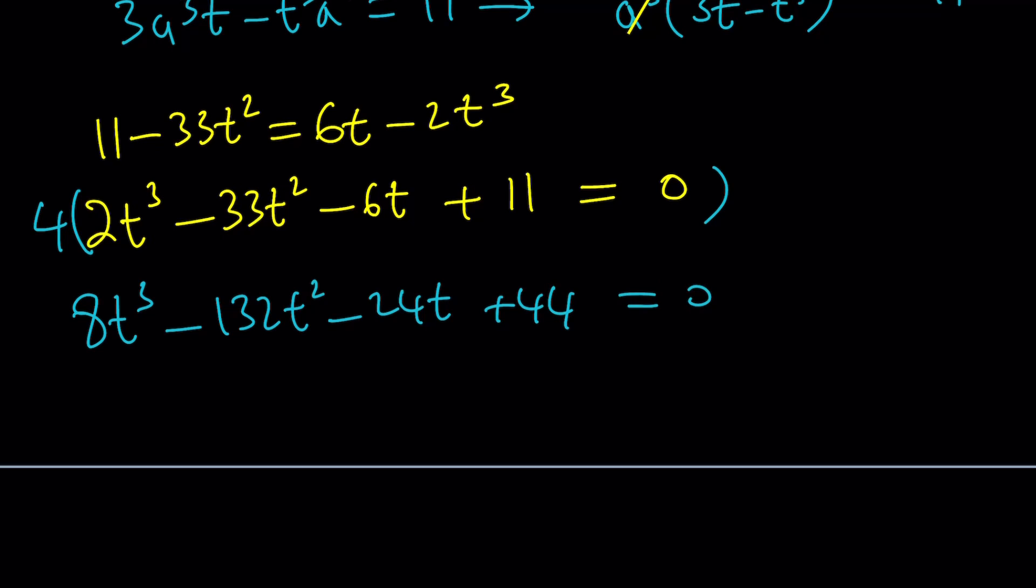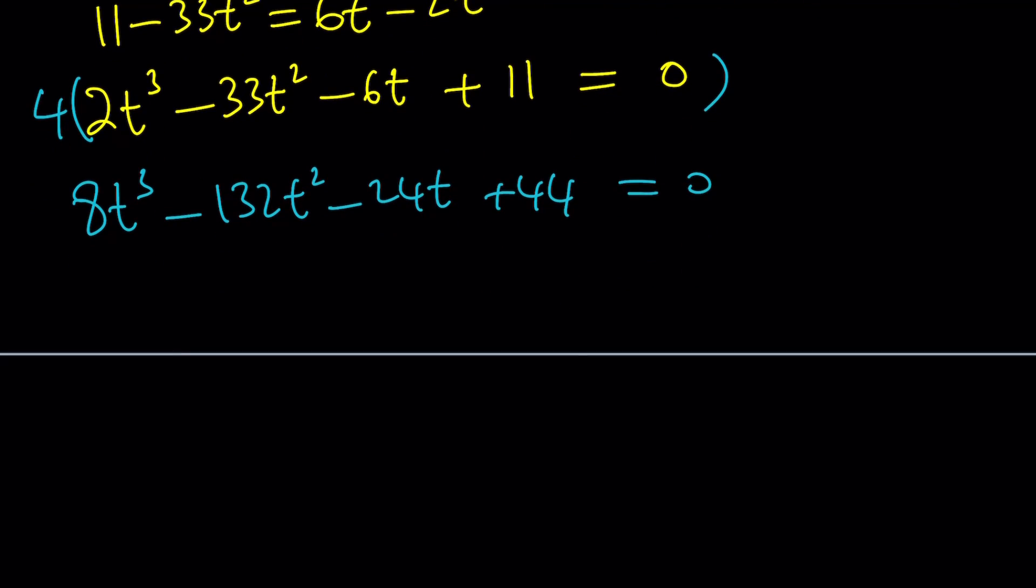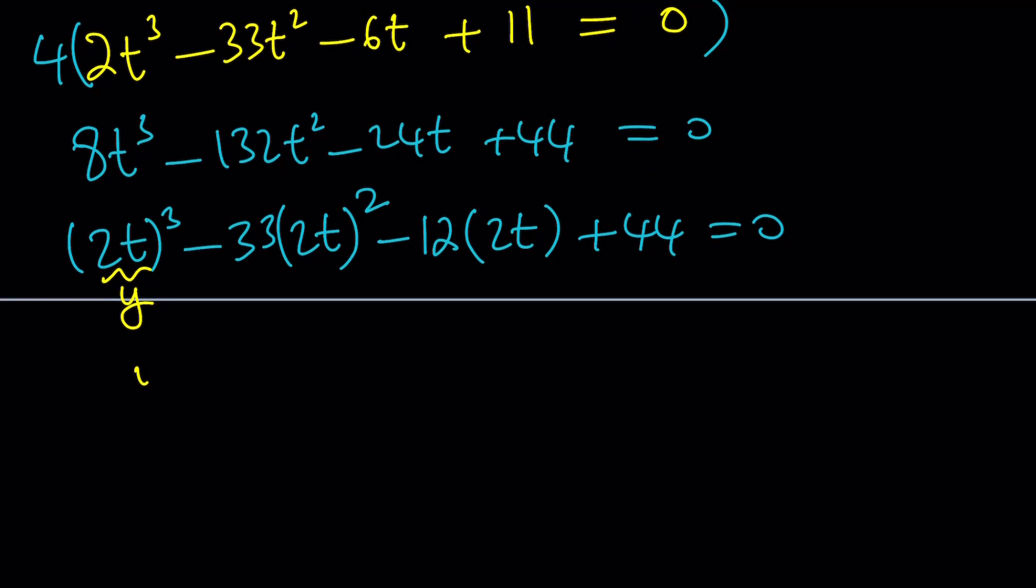Now I want to make this polynomial monic, which means I want to make its leading coefficient 1. So let's go ahead and multiply both sides by 4. That gives us 8T cubed minus 132T squared minus 24T plus 44 equals 0. And then I want to write it as follows: This is 2T quantity cubed, this is 33 times 2T squared, minus 12 times 2T plus 44 equals 0. By replacing 2T with something, how about Y? And don't ask Y.